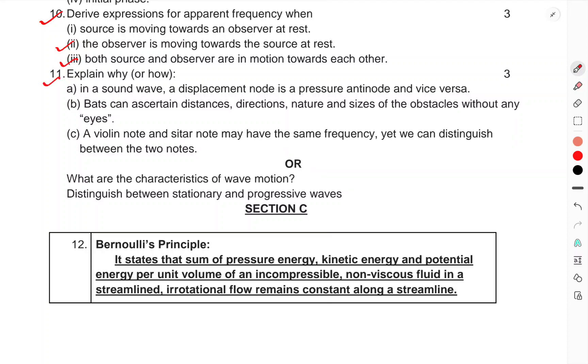Question 11. Explain why or how: (a) In a sound wave, the displacement node is a pressure antinode and vice versa. (b) Bats can ascertain distance, direction, nature, and size of the obstacle without any eyes.